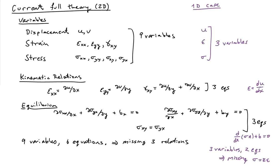Just to remind ourselves, if we consider the 1D case, in the 1D case we had one displacement U, one strain epsilon, and one stress sigma. So that's three variables.